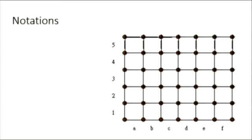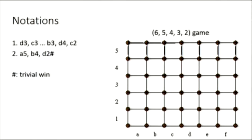So, now we introduce the notations. The columns are labeled with letters, and the rows are labeled with numbers. The game we've seen just now may be annotated like this.